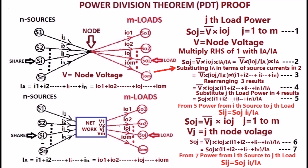Substituting i-a in the numerator in terms of source currents results in equation 3. Rearranging equation 3 results in equation 4, as shown in the display. That is, V conjugate multiplied with IOJ multiplied with the sum of source currents divided by total source current i-a, as shown in equation 4. Substituting the j-th load power in equation 4 results in equation 5.